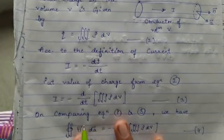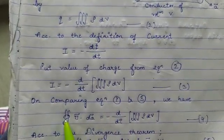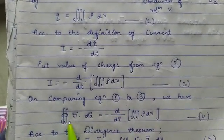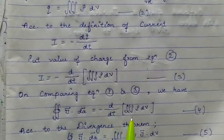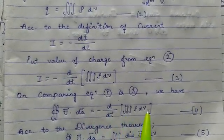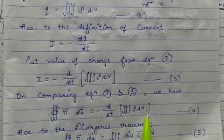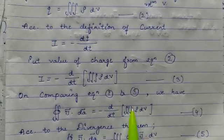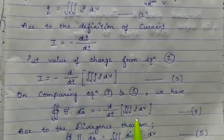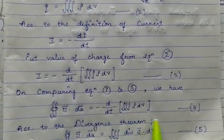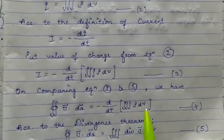Now I'm comparing equation 1 and equation 3. Writing: closed surface integral of J·dA is equal to negative d/dt of the triple integral of ρ dV. This represents the total current through the conducting surface. Write it as equation number 4.